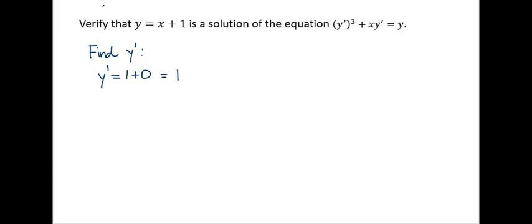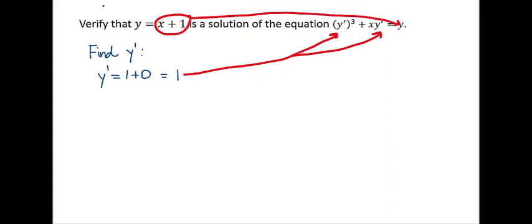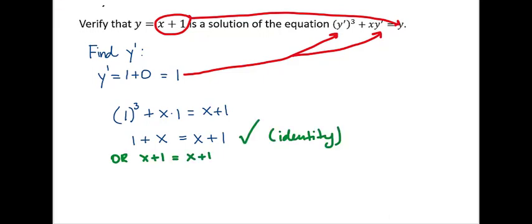Now we plug y prime as 1 and y as x plus 1 into the equation. We get: 1 to the third power, plus x times 1, equals x plus 1. Simplifying: 1 cubed is 1, x times 1 is x, so the left-hand side becomes 1 plus x, and the right-hand side is x plus 1. That is an identity — the left-hand side equals the right-hand side. So we just verified that y equals x plus 1 is indeed a solution of the given differential equation.